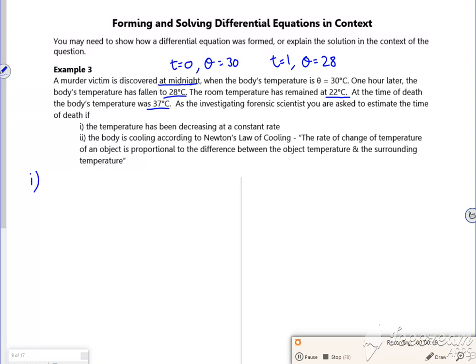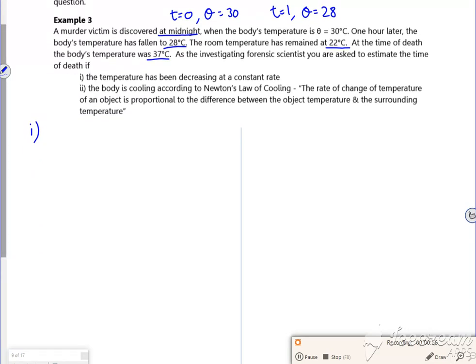Part one is the temperature has been decreasing at a constant rate. So if it decreases at a constant rate, then the change in temperature over time is just a constant, which is minus k.